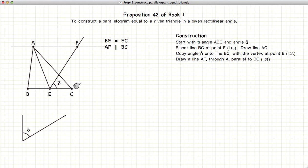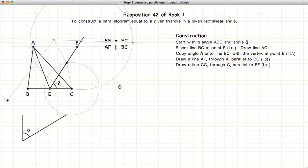Finally, we're going to draw a line parallel to EF from the point C, again using the methods described in Proposition 31. And now we construct our parallelogram FECG.